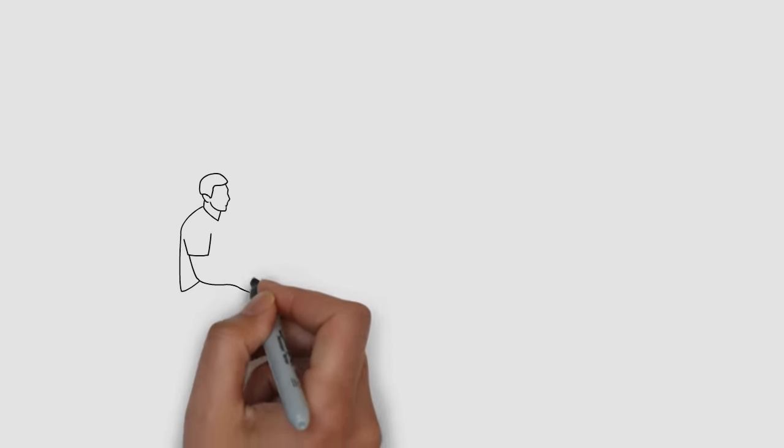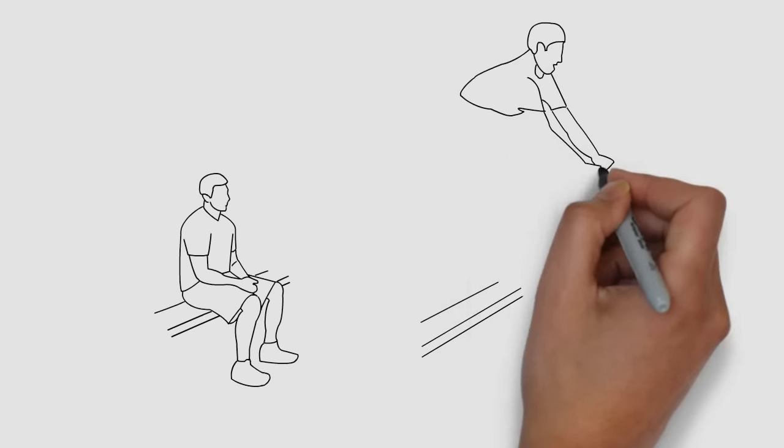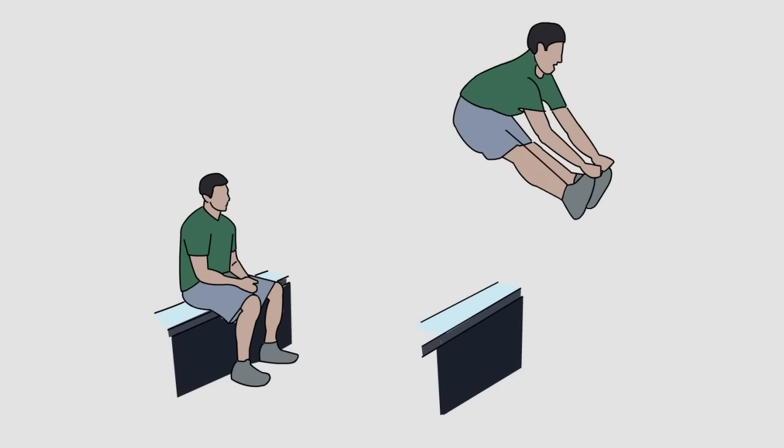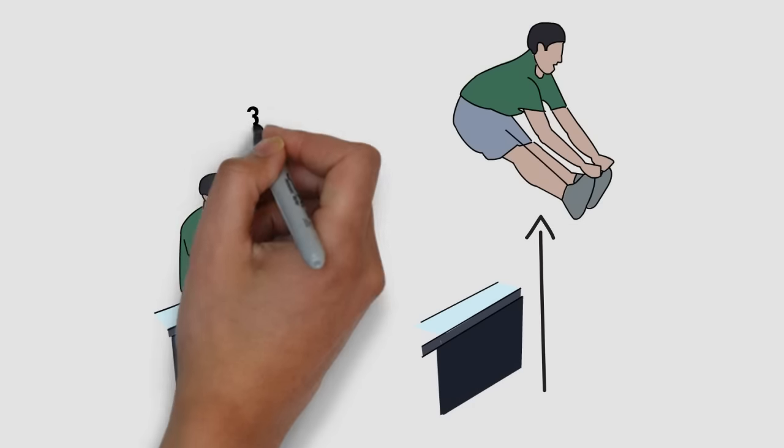This is another great example. Sit comfortably on a bench or a box. Jump up and touch your toes. Do three sets of ten for best performance.